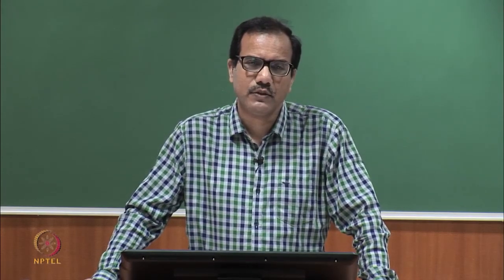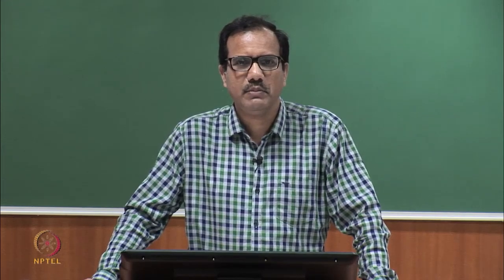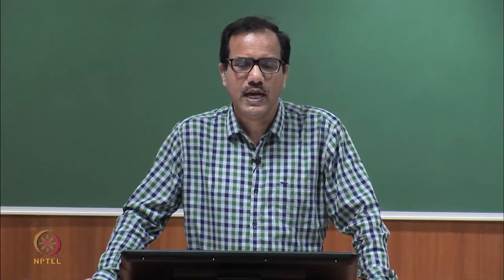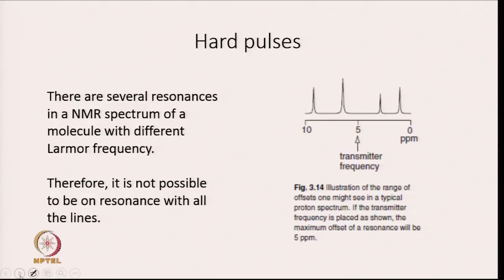If we take a complex molecule, it is going to have various types of protons, and hence the FID will be a superposition of various frequencies, each having a different decay rate. The question is: we apply a pulse at one time — suppose a 90-degree pulse to get a 1D spectrum — but there are several resonances in the NMR spectrum with different Larmor frequencies, and it is not possible to be on resonance with all the lines. So we have to choose a transmitter frequency such that we affect all resonances at the same time.